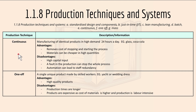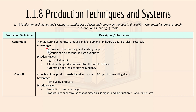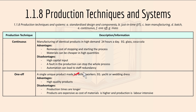Continuous production is the manufacturing of identical products in high demand, 24 hours a day — like glass or Coca-Cola. An advantage is it removes the cost of stopping and starting the process, and materials can be cheaper in high quantities when ordering in bulk. Disadvantages include high capital input, a fault in production can stop the whole process, and automation can lead to staff redundancy and unemployment.